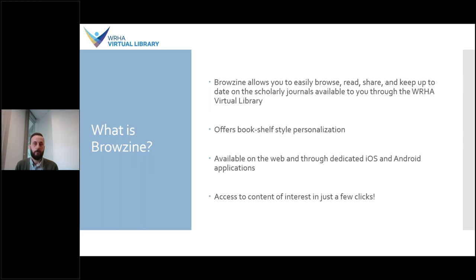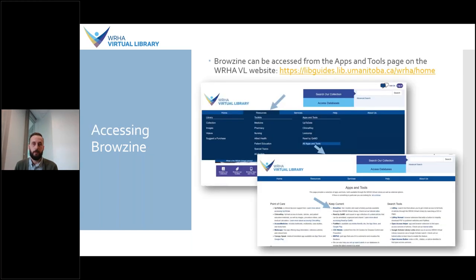I'll be using the web version today, but Browzine is also available through iOS and Android applications, which means you can browse and read on a number of different devices. And most importantly, it's easy to use and allows you to access journals of interest in just a few clicks. You can access Browzine from the apps and tools page on the WHA Virtual Library website, and I'm going to show you what that looks like right now.